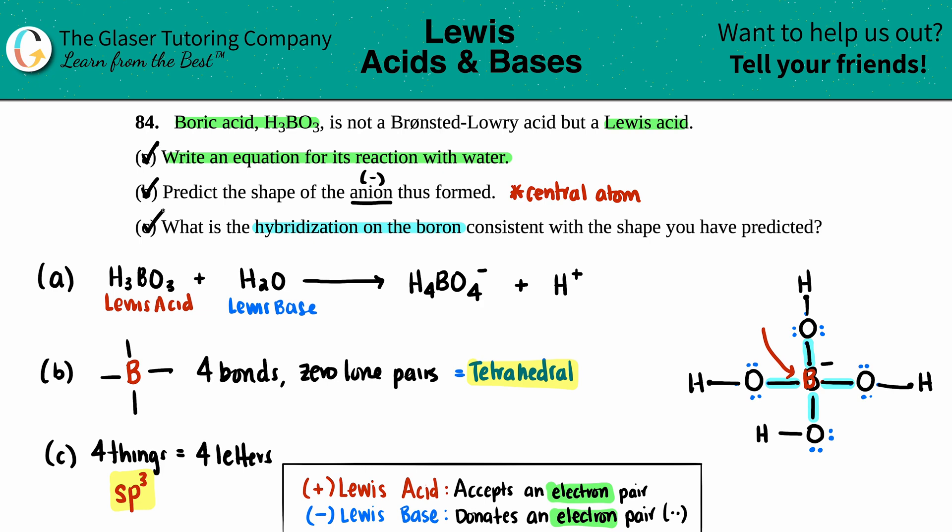So sp³ hybridization, tetrahedral for the shape, and we have the balanced equation. We are done with this problem. I hope this helped you out. Subscribe to the channel, and thank you so much. Good luck on your tests and quizzes!